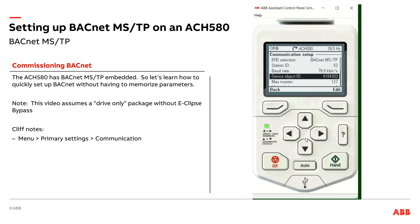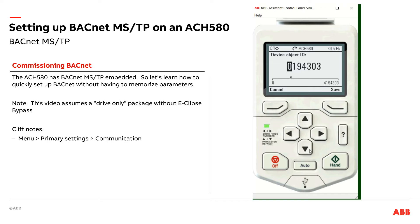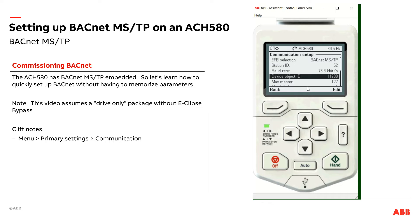Then I have my device object instance ID. This is the number that needs to be unique within the entire network. So let's say mine happens to be — let's say 11,900. There's my device object instance ID.